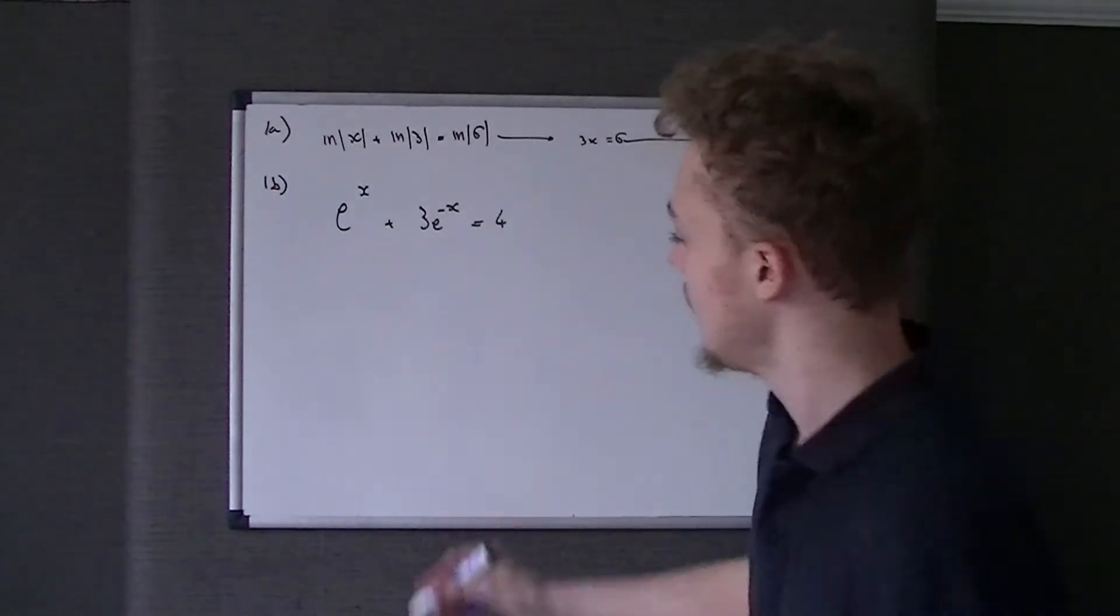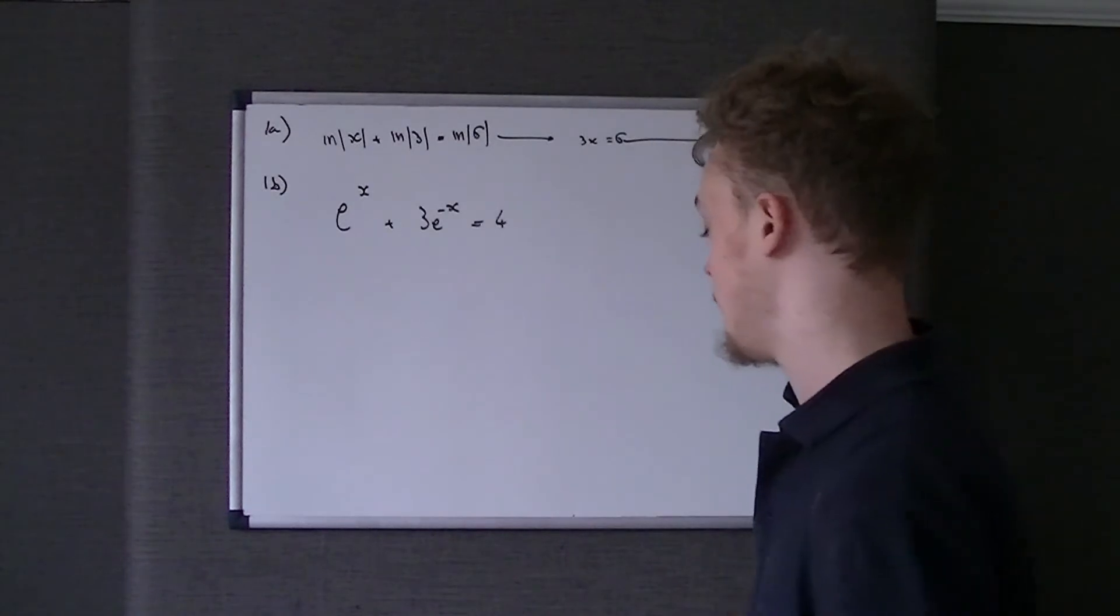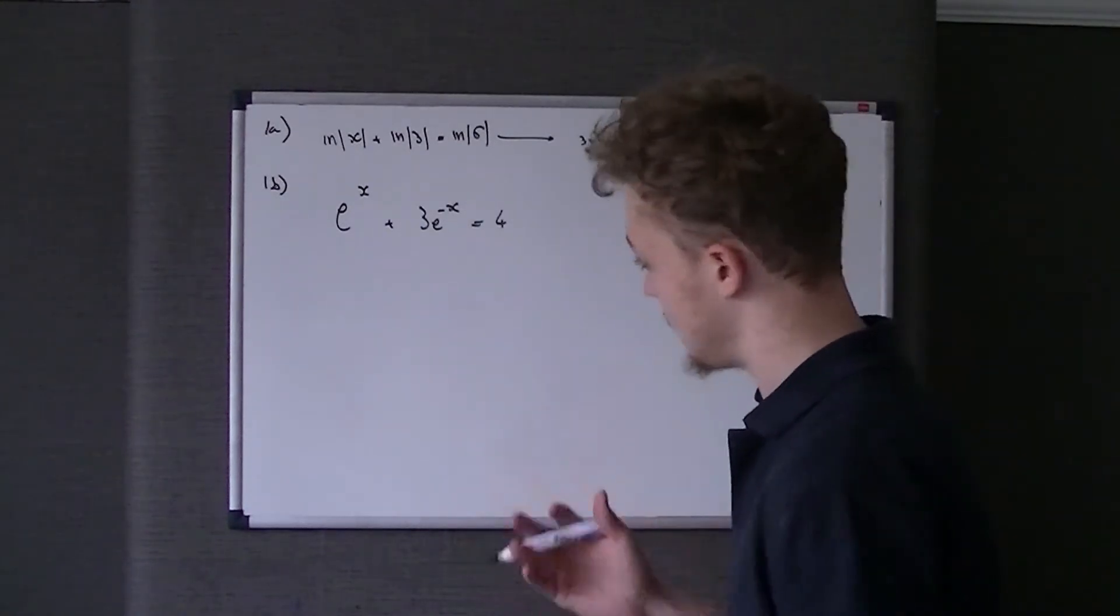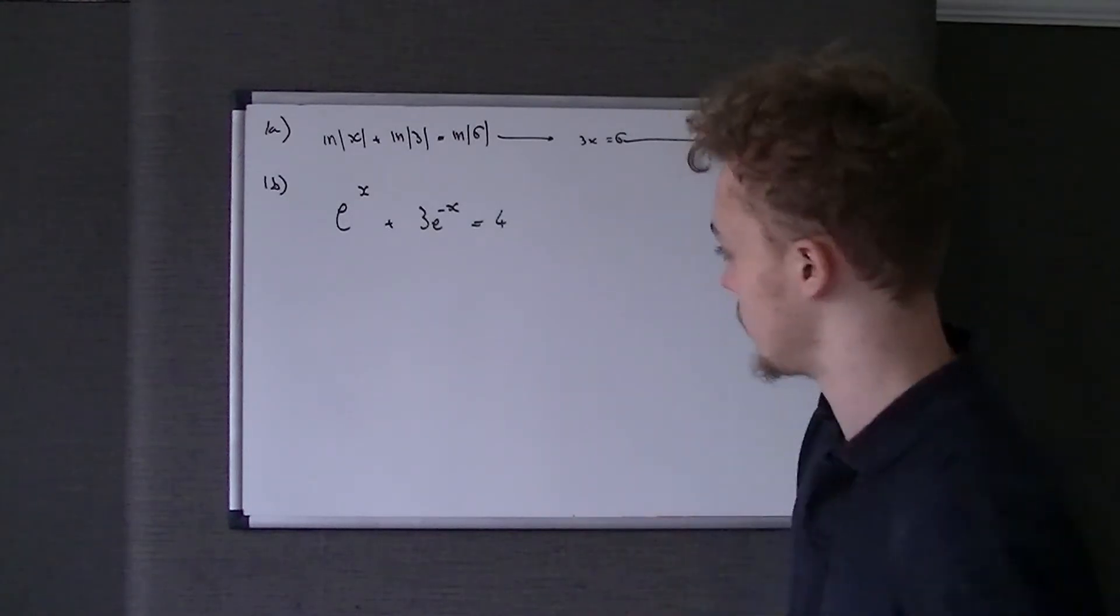But that's minus e to the x, e to the minus x, so you couldn't do that. You might rearrange it to get equal to 0, but we're going to do that just after we've done this first step.